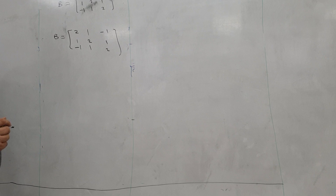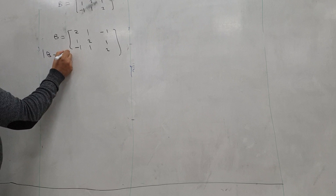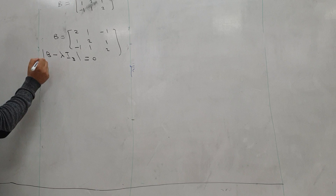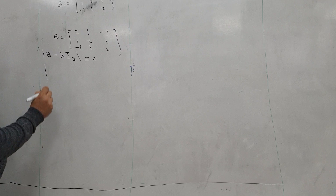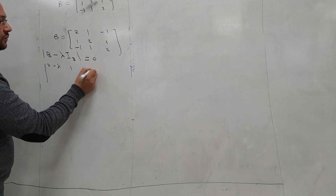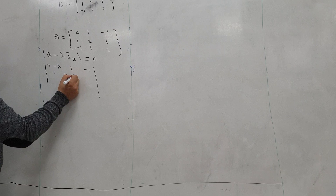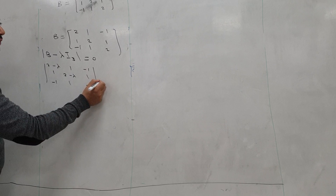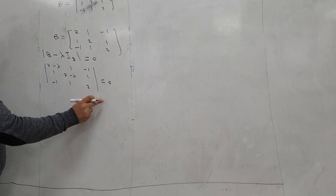First, we will write the characteristic equation: det(V minus lambda I) equals 0. So the characteristic determinant will be: 2 minus lambda, 1, minus 1; 1, 2 minus lambda, 1; minus 1, 1, 2 minus lambda; equal to 0. This is the characteristic determinant.